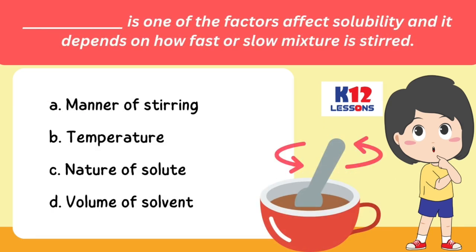Blank is one of the factors that affects solubility, and it depends on how fast or slow the mixture is stirred. A. Manner of stirring. B. Temperature. C. Nature of solute. D. Volume of solvent.